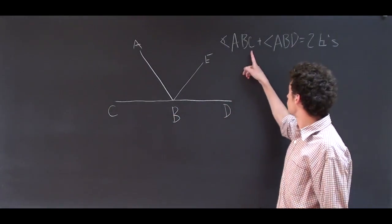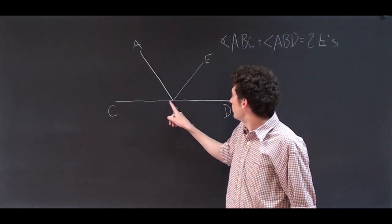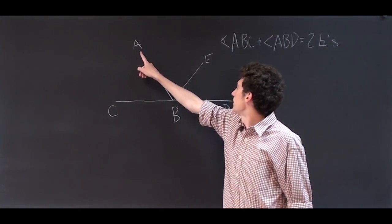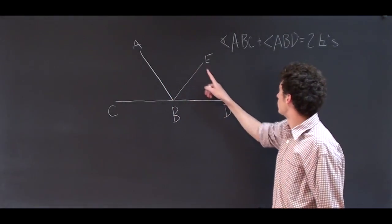Therefore, the same will also be true that angle CBA plus angle ABE will equal two right angles.